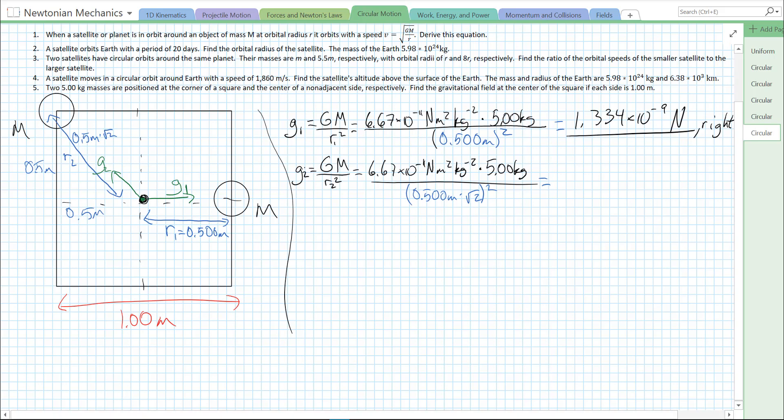And we get 6.67 times 10 to the minus 10 meters. And the angle is 135 degrees counterclockwise.